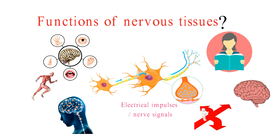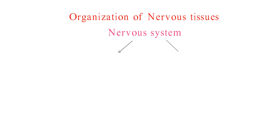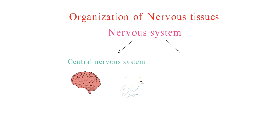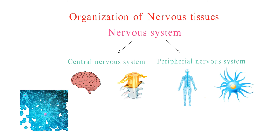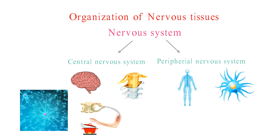To better understand how nervous tissue works, we need to talk about its organization. The nervous system is divided into two main parts: the central nervous system, which includes the brain and spinal cord, and the peripheral nervous system, encompassing all other nerves and ganglia. Nervous tissue is organized into intricate circuits and networks of neurons that work together to process and transmit information, allowing us to react to our environment, make decisions, and even form memories.